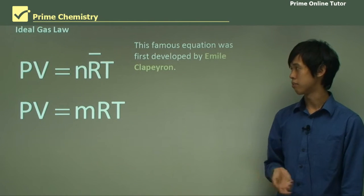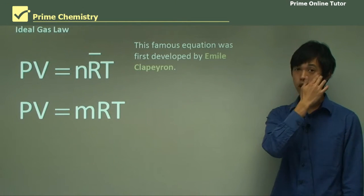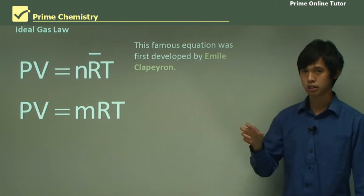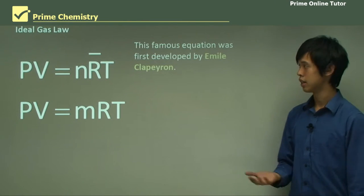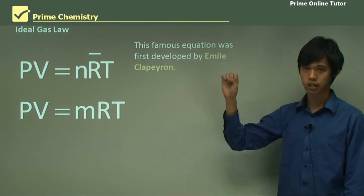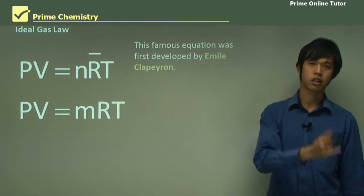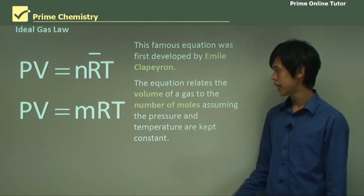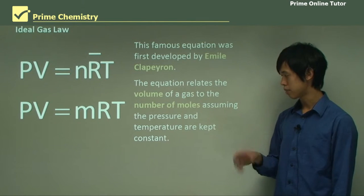So this equation was first developed by Emile Clapeyron from experiments. And then later, a scientist called Clausius developed this same equation, but from first principles through thermodynamics. So here it is. This is our equation. And the equation relates the volume of a gas to the number of moles assuming the temperature and pressure are kept constant.